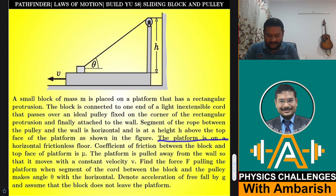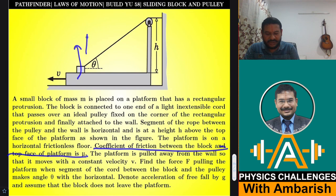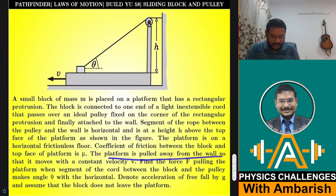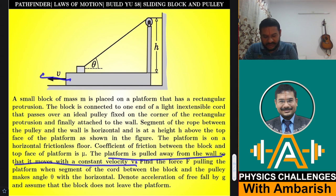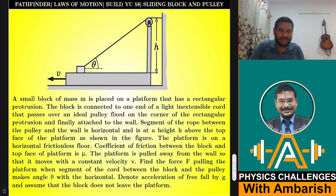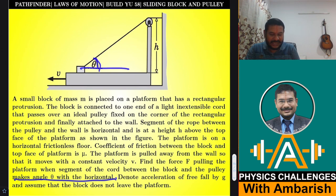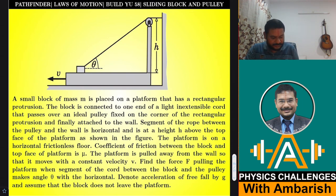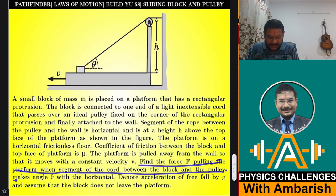The platform is on a horizontal frictionless floor, so mu equals zero for the floor. The coefficient of friction between the block and the top face of the platform is mu. The platform is pulled away from the wall so that it moves with a constant velocity v — you will have to adjust the force to maintain constant speed. Find the force F pulling the platform when the segment of the cord between the block and the pulley makes an angle theta with the horizontal.